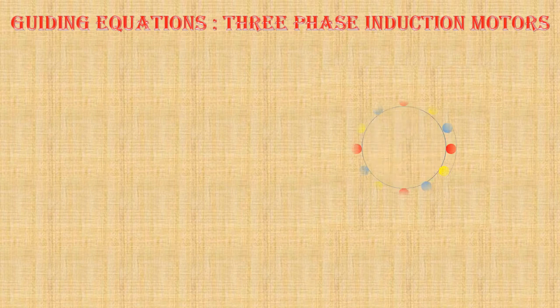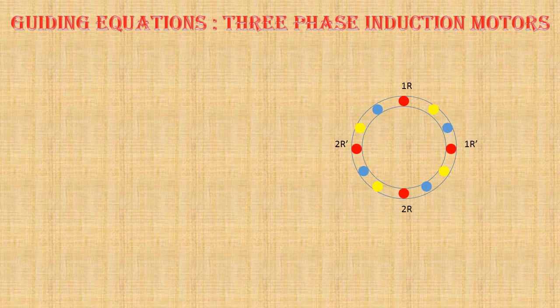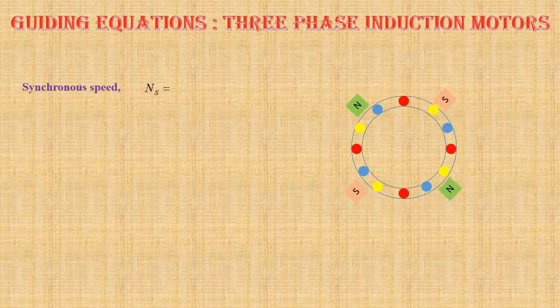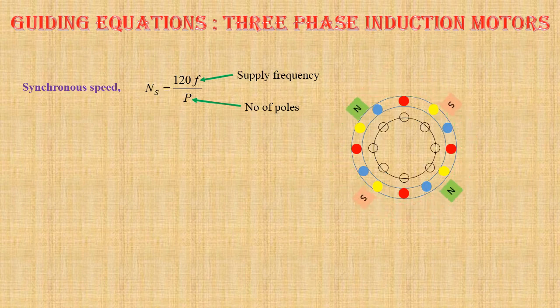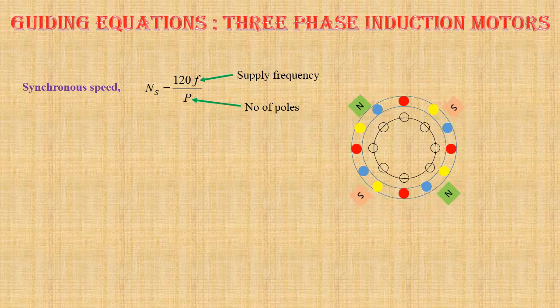Let us have a look at the equations we shall need today to solve the numerical problems. Here we can see a four-pole stator structure of a three-phase induction motor. When three-phase AC excitation is applied to the stator, it produces a magnetic field which rotates at synchronous speed: Ns equals 120f by p, where f is the supply frequency and p is the number of poles. When the rotor is placed in this magnetic field, rotor conductors will experience a time-varying magnetic field, and EMF will be induced in the rotor conductors.